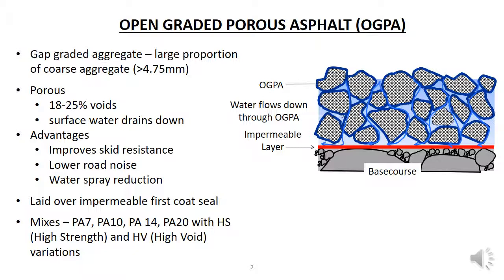It is an asphalt designed to allow water to flow through it. The advantage is that surface water does not have to flow over the road surface to the channel or drain system. Instead it flows straight down into the asphalt, as shown in this diagram. The OGPA is constructed on an impermeable surfacing, usually a chipped seal, so the water flows down to the impermeable surface, then flows along to the collector drainage system.